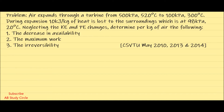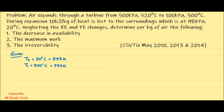Let's write out all the given values. The surrounding temperature T0 is 20 degree Celsius, which is 293 Kelvin — we will be converting all temperatures to Kelvin. The initial temperature T1 is 520 degree Celsius, which is 793 Kelvin. P1 is 500 kilopascal.